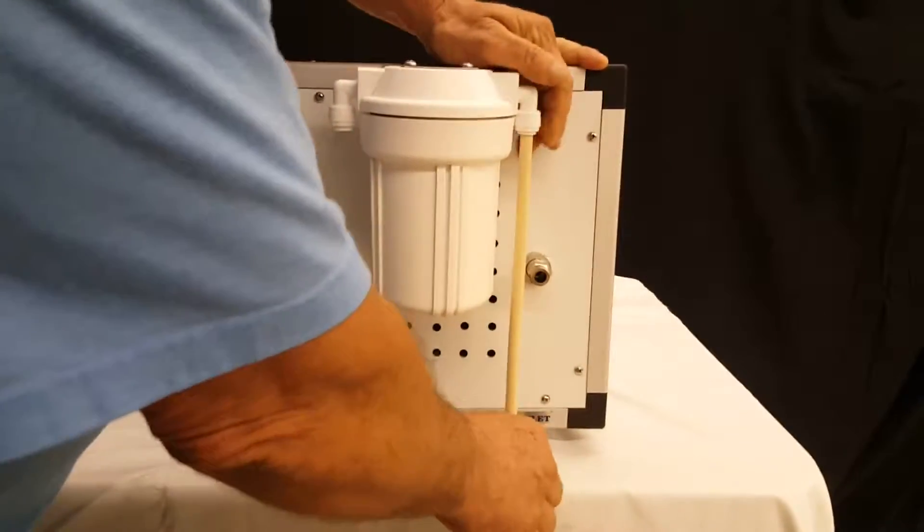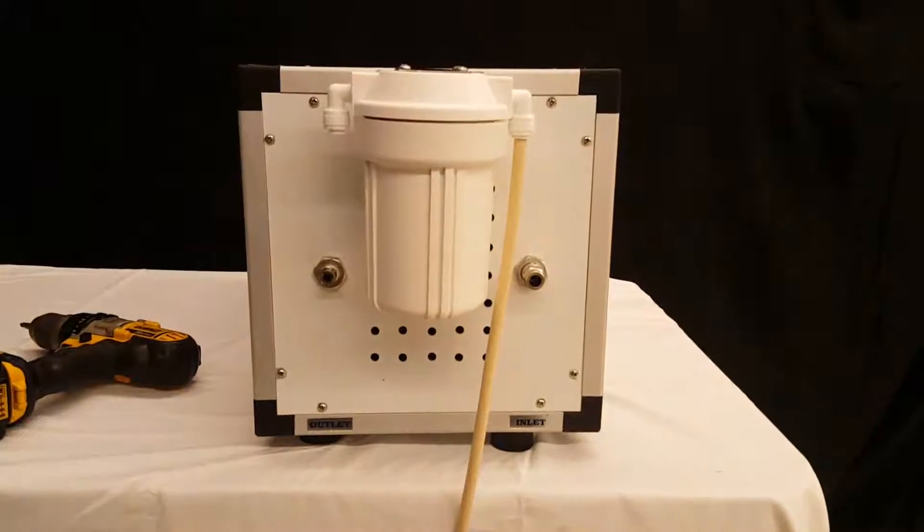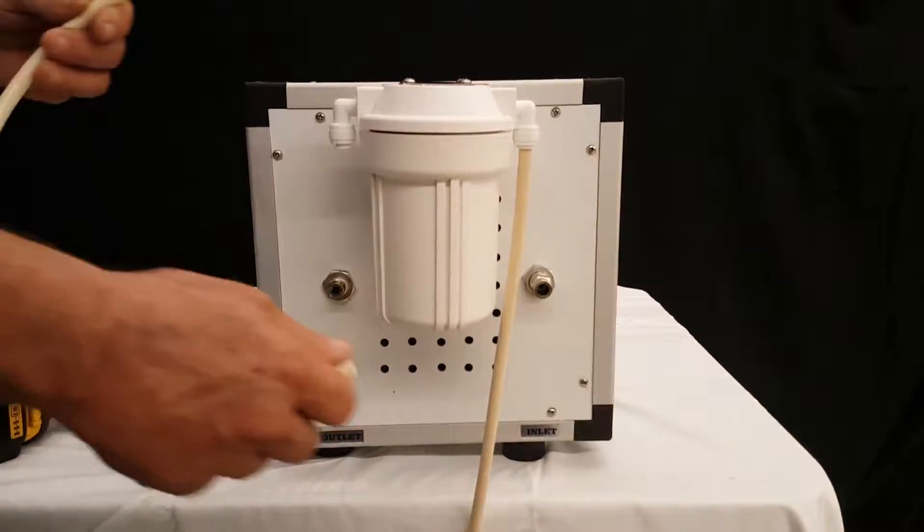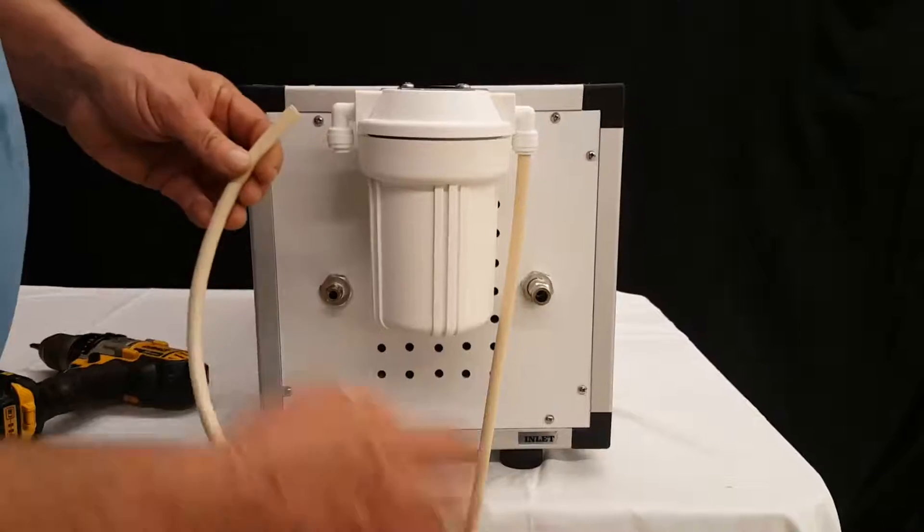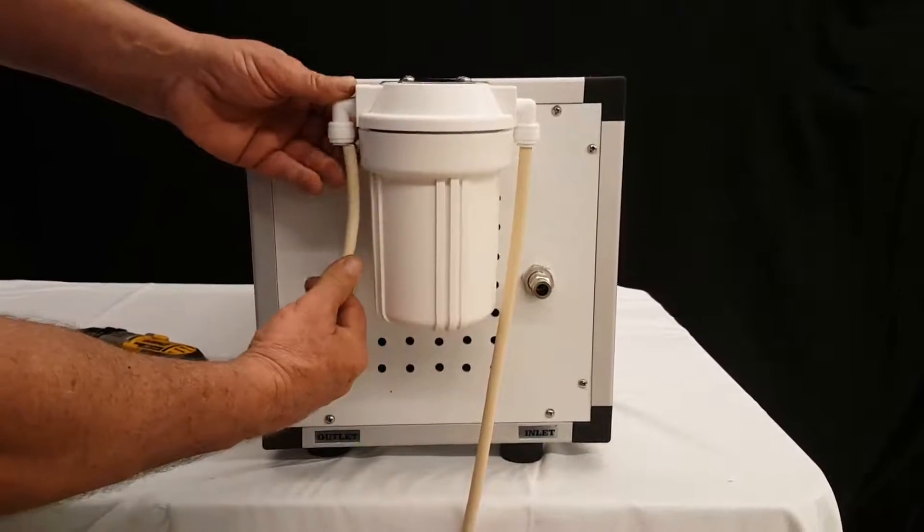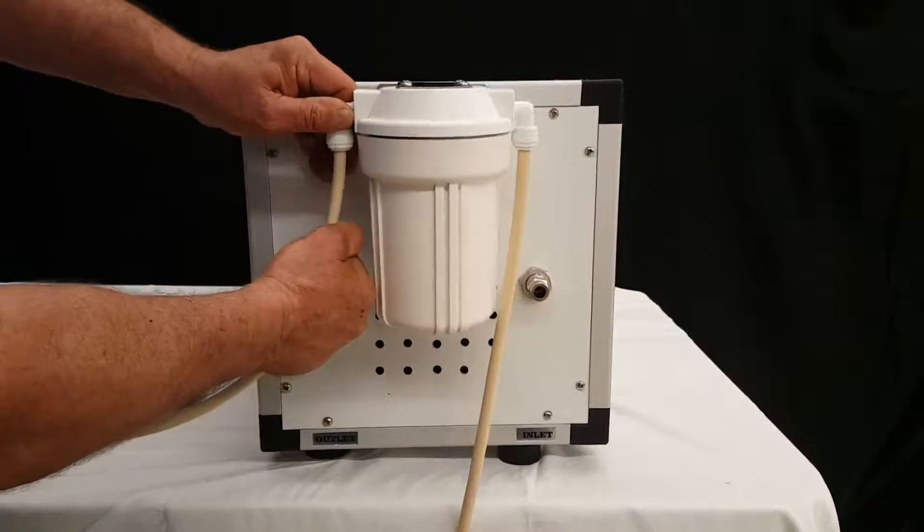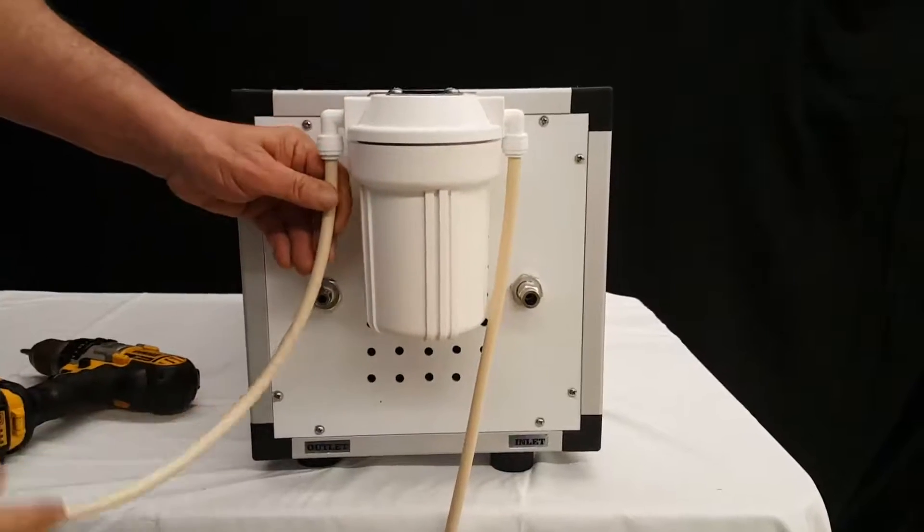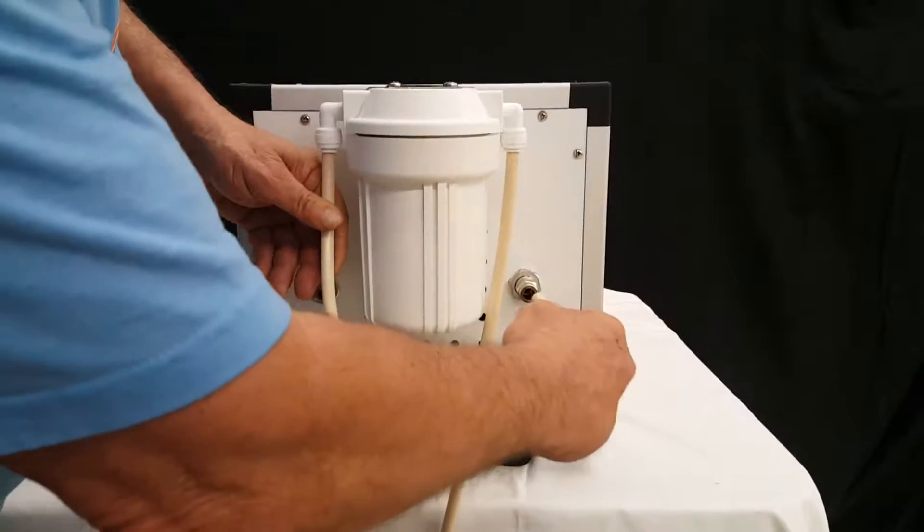Your other piece of tubing, which is 16 inches long, will go into the outlet on the filter. Push firmly and into the inlet on the pump.